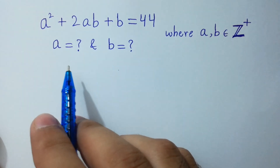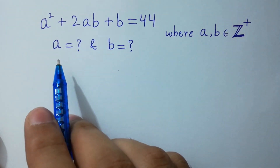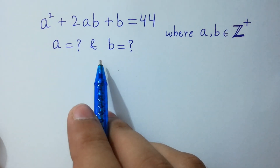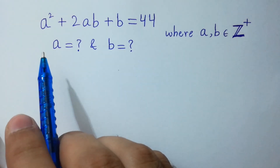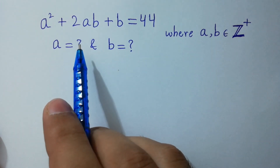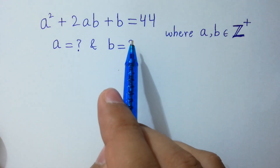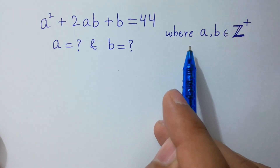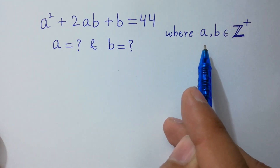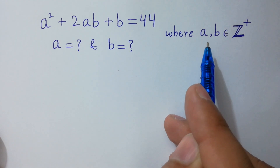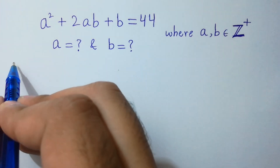Hello friends. Find the value of a and b if a squared plus 2ab plus b equals 44, where a and b belong to positive integers. Let's solve it.